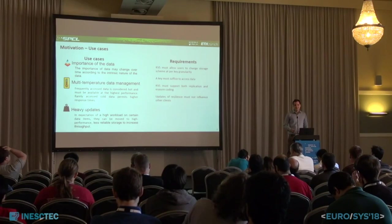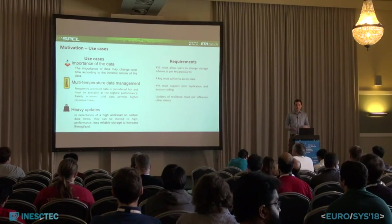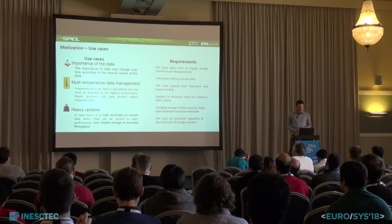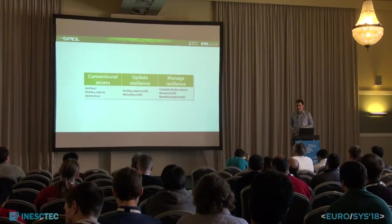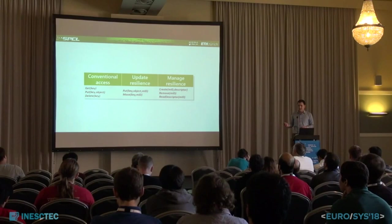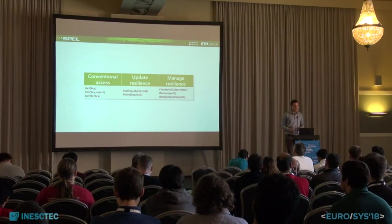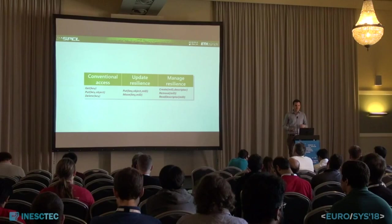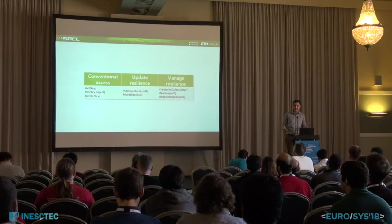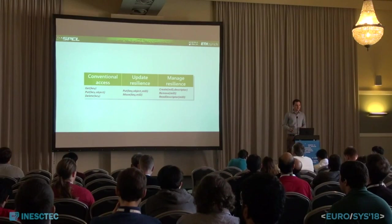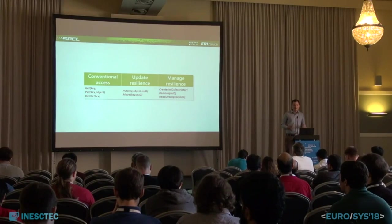There has been much work on relaxing consistency to tune performance; here we are proposing to tune performance through changing storage schemes. To enable this, the process of changing storage scheme has to be cheap and consistent. Our key-value store complies with all these requirements and supports the following API: conventional functions like get, put, and delete where the client is oblivious to how data is stored, or the client can specify the desired storage scheme ID. With a create call, the client can create a storage scheme and assign it to an ID — for example, replication-3 assigned to ID 0 — and then use that ID when writing data. The client can also change the storage scheme on the fly with a move request, specifying only the key and the desired storage scheme.